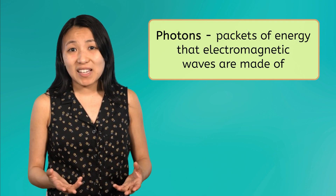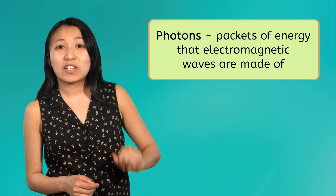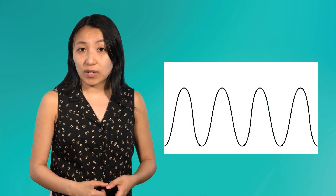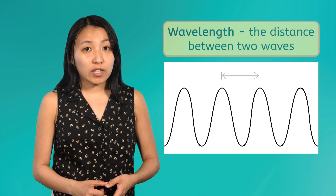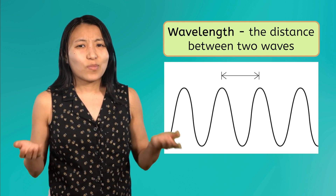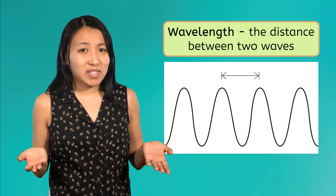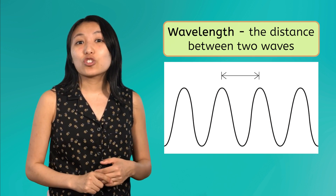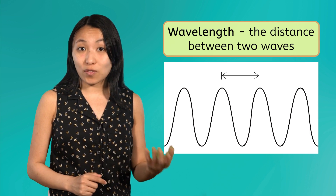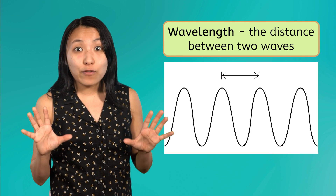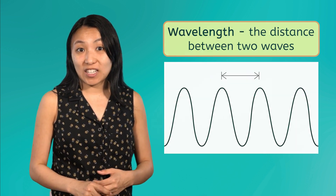These particles are called photons, which are basically just little packets of energy. Whether or not we can see light or electromagnetic radiation largely comes down to its wavelength, or the distance between two waves. Knowing the wavelength helps us choose the right tool to observe the electromagnetic waves. And as it turns out, nearly EVERYTHING emits waves of electromagnetic radiation.